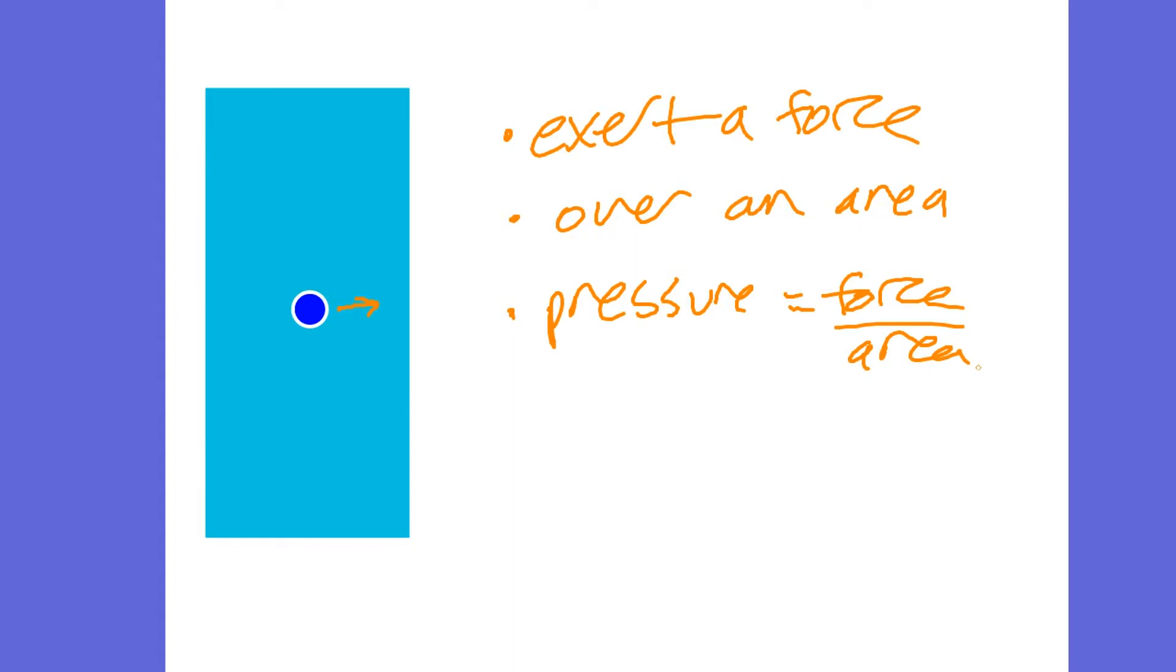So when asked to explain why a particle exerts force, it obviously collides with container first, which is probably useful to add. Exerts a force over an area, pressure equals force over area. So for a cold gas it's going to be moving at a certain speed exerting a certain force. If we make the gas hot, if we increase the temperature, you can see standard colors for hotter gas.